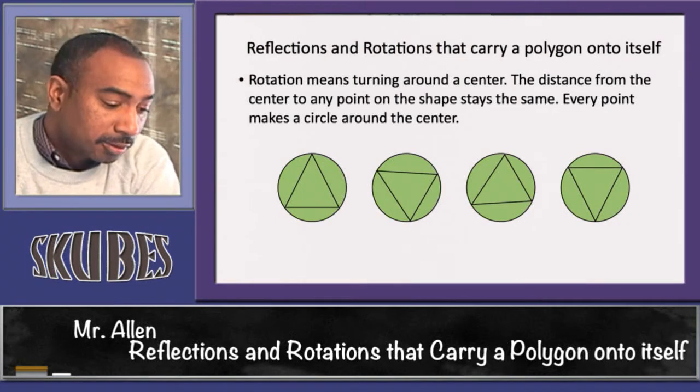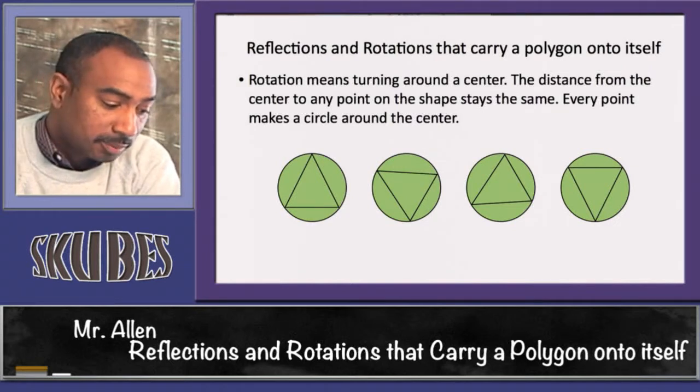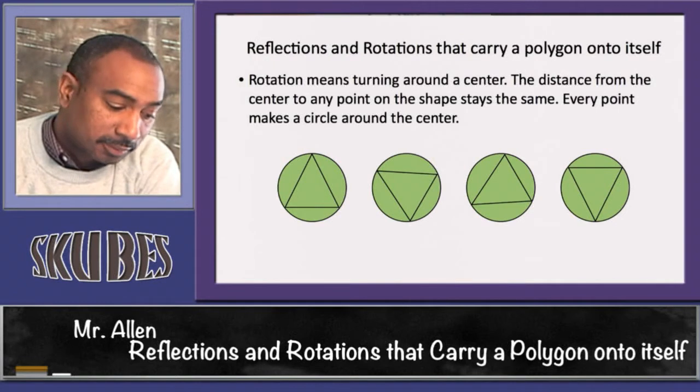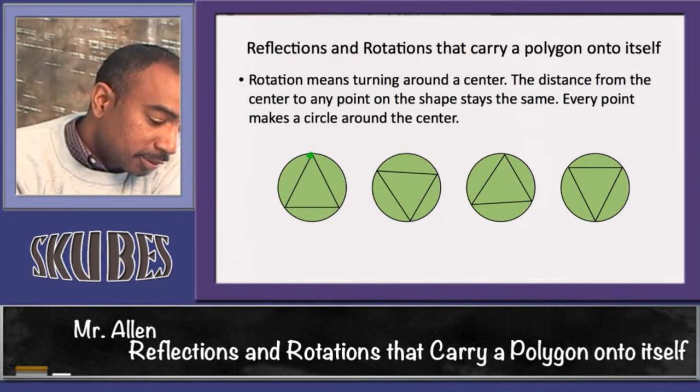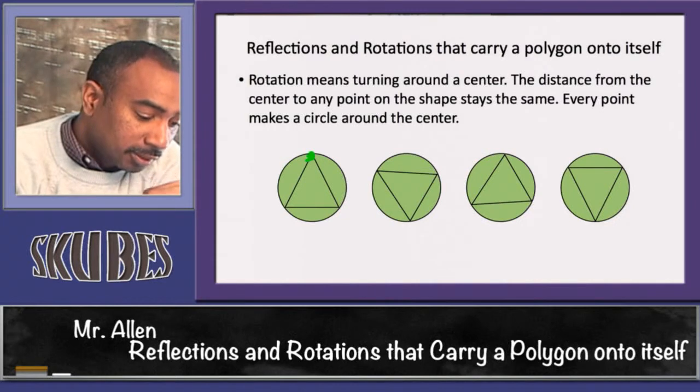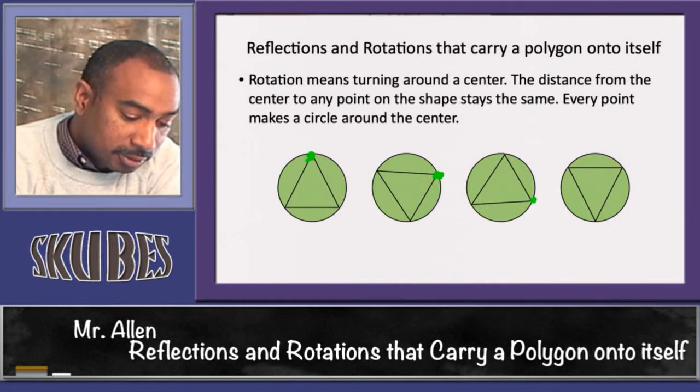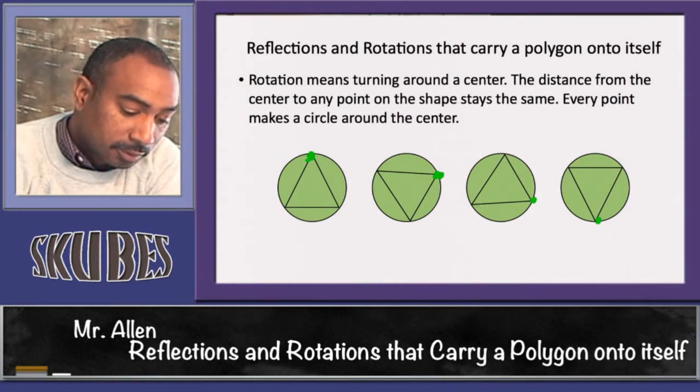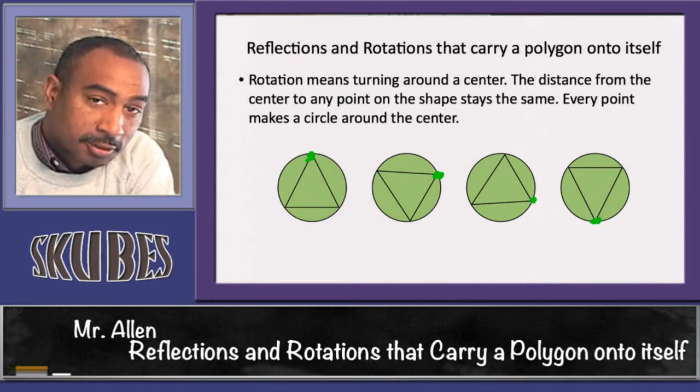Rotation means turning around a center. The distance from the center to any point on the shape stays the same. Every point makes a circle around the center. For example, let's say this is my center point. It simply spins around in a circular motion. You don't change the shape, you just move the orientation.